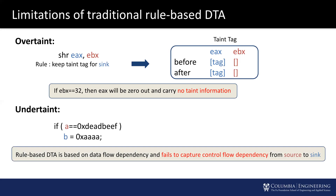On the other hand, under-taint errors can also occur. Rule-based dynamic taint analysis is based on data flow dependency, while it ignores implicit control flow dependency. As the example shows here, although variable B is affected by variable A, the information flow cannot be detected by rule-based dynamic taint analysis.